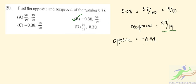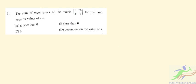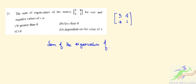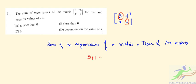Question number 21: find the sum of the eigenvalues of the matrix for real and negative values of x. We know that the sum of the eigenvalues of a matrix equals the trace of the matrix. Here the diagonal entries are 3 and 1, so the trace is 3 plus 1 equal to 4, which is greater than 0. So the sum of eigenvalues is greater than 0, and the correct option is A.